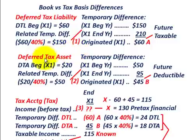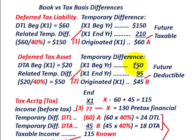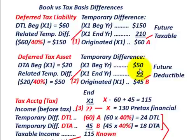Now let's look at the deferred tax asset. At the beginning of the year, we're given a deferred tax asset of $20,000. The related temporary difference is $20,000 ÷ 40% = $50,000. At the end of the year, the temporary difference is $95,000, so there's an increase from $50,000 to $95,000.